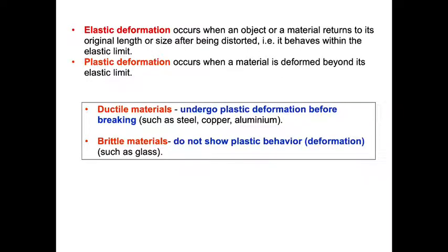We have two types of materials: ductile and brittle. Ductile materials undergo plastic deformation before breaking, such as steel, copper, and aluminum. Meanwhile, brittle materials don't show plastic behavior or deformation, such as glass. If you want to make it easier to remember or understand, ductile material is metal or anything that can return to its original position. Meanwhile, brittle material is, let's see, glass, one of the examples.